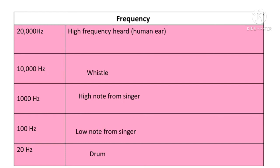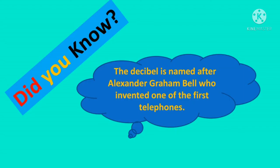So we have discussed the low-note and high-note frequency levels that humans can hear. We have also learned that the decibel is named after Alexander Graham Bell, who invented one of the first telephones. That's it for today — we have learned about sound waves, light, and heat. Don't forget to subscribe to the channel and press the bell icon. Thank you so much for watching this video!